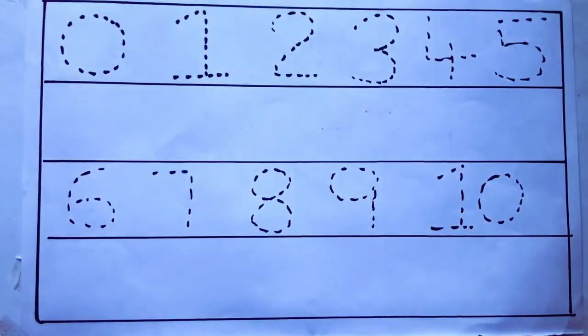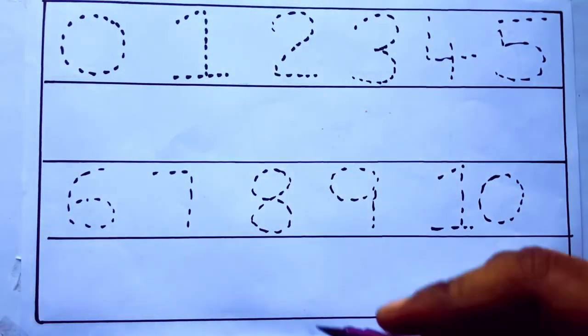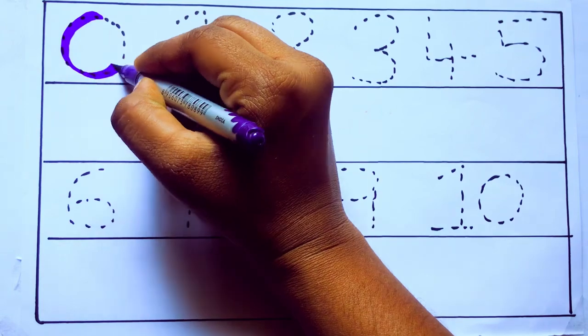Let's draw numbers. Violet color 0, Z, E, R, O.